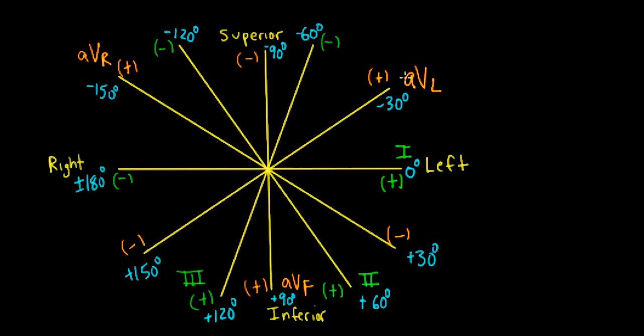And then we have the unipolar leads, AVL, AVF, and AVR. And they're all 60 degrees from each other too. And they have their perpendicular pairs with the bipolar leads.